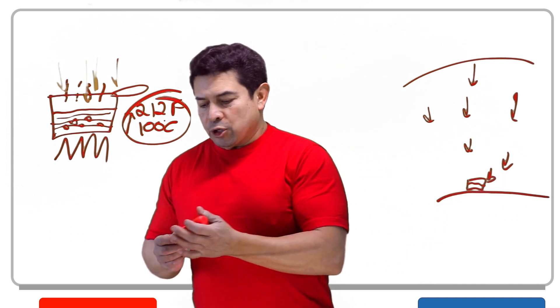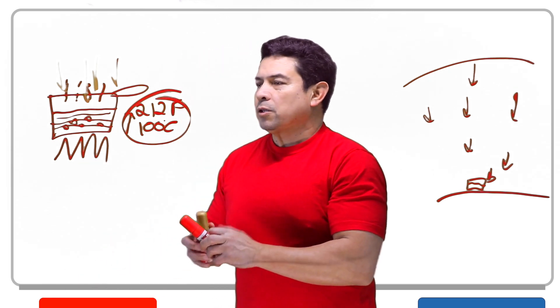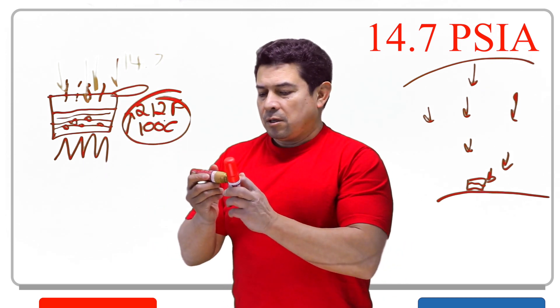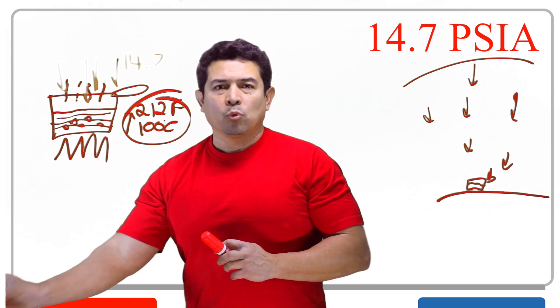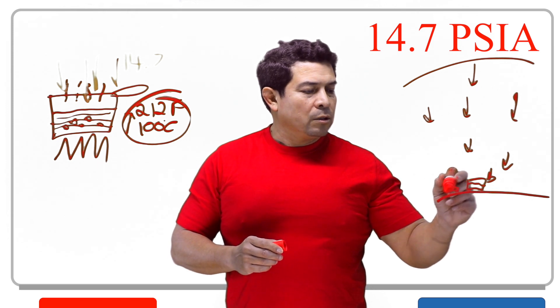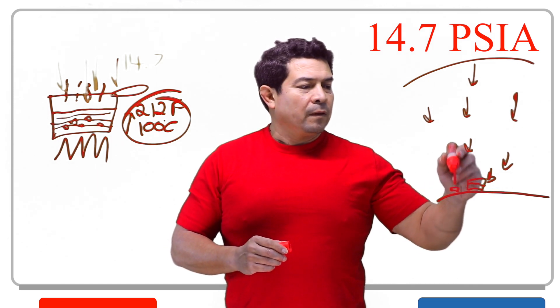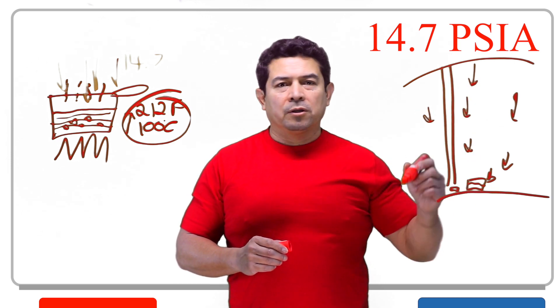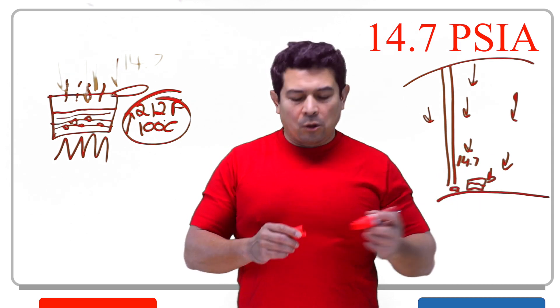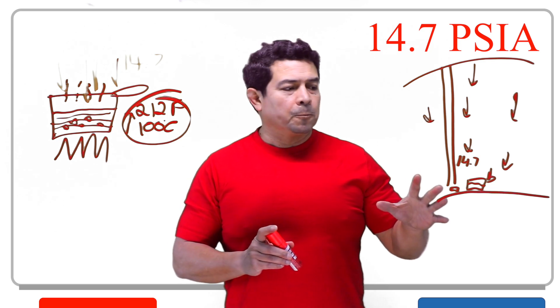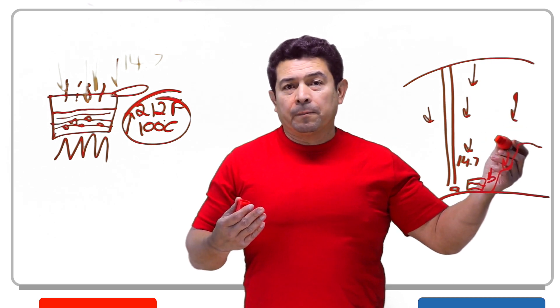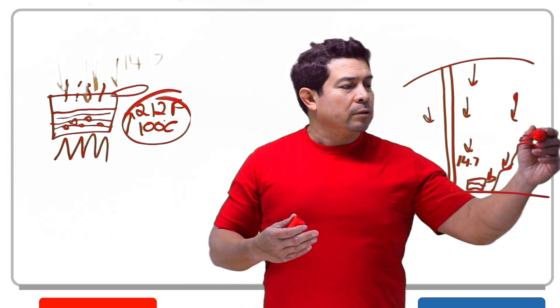Well, the pressure that's going to be pushing down is going to be what they call 14.7. It's going to be 14.7. That's how much that column weighs, but that is per square inch. That means that if we take one square inch and we lay it down at the beach, that column that's going to be all the way up into space is going to weigh that 14.7 pounds. This is what they call PSIA, pounds per square inch absolute. Now, if we move to a place that's higher, let's say for example Denver, Colorado...